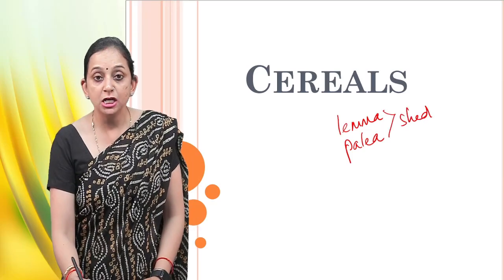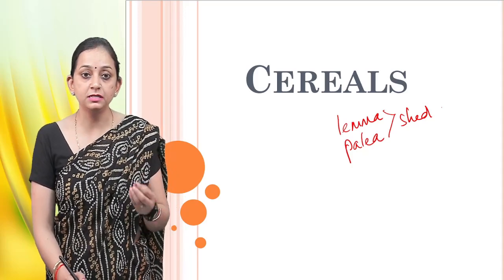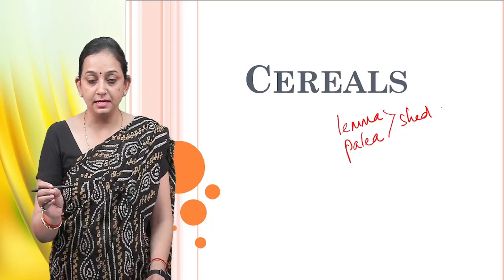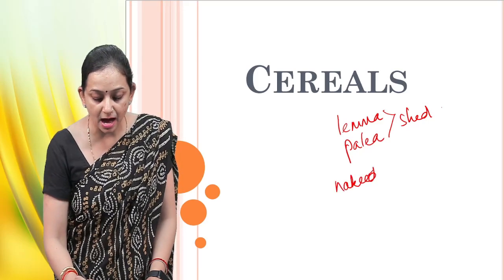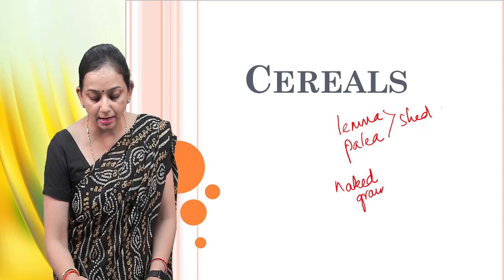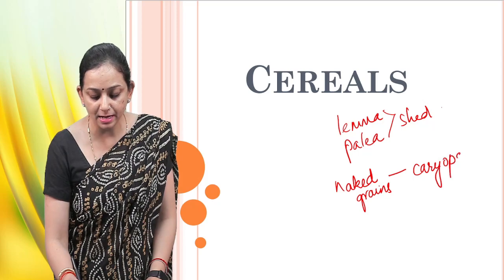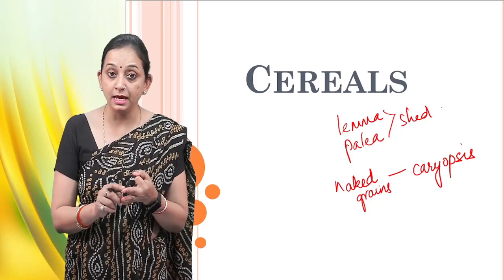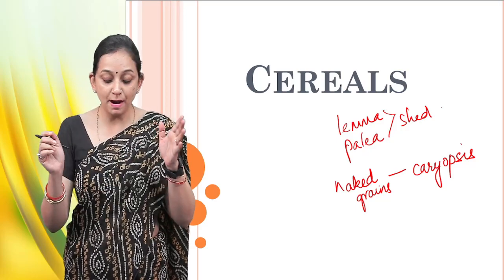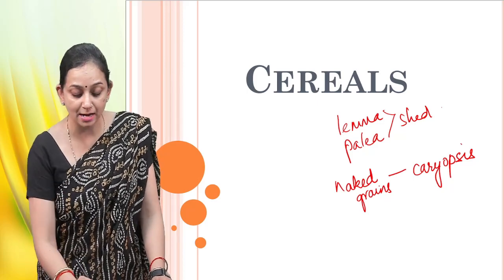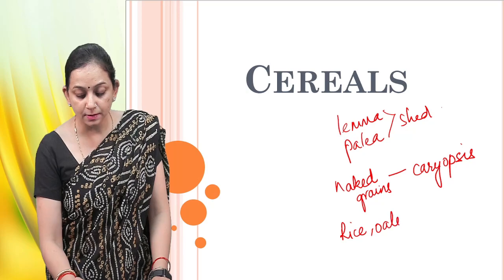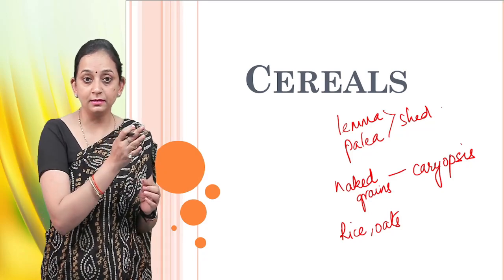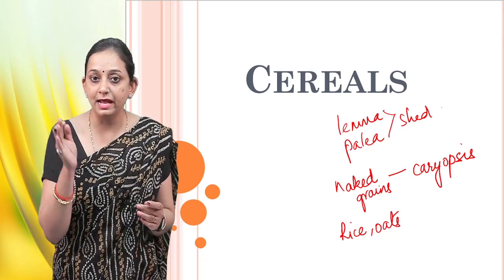The lemma and the pallea are shed off during the threshing of wheat, rye, maize, sorghum, and barley, leaving the naked seed. These naked grains are called caryopsis — spelled C-A-R-Y-O-P-S-I-S. However, in certain other cereal products like rice and oats, the layers are still there and the grains remain covered by the lemma and the pallea.